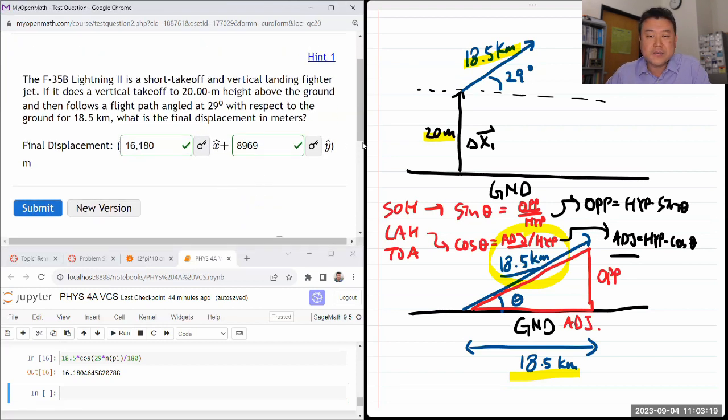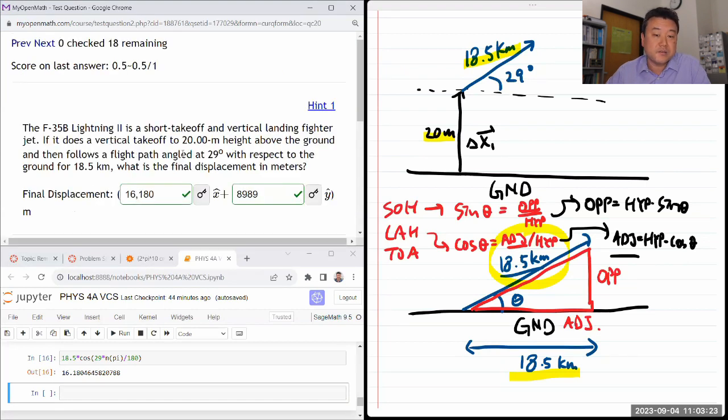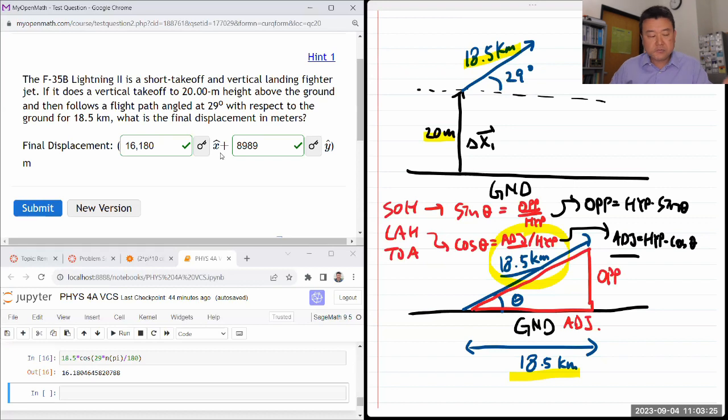And if you had added in this 20 meters, it would still say it's correct. Just that it grades based on tolerances, 1% tolerance. So that 20 meters, it's within 1% of the overall value. So whether it's there or not doesn't matter. It'll be graded correct either way.